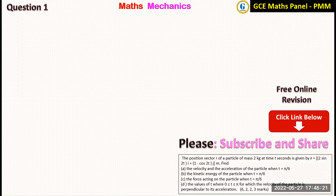The first question reads: the position vector r of a particle of mass 2 kg at time t seconds is given by r equals 2 sine t i plus 1 minus 2 cos t j. Part A: find the velocity and acceleration of the particle at t equals pi on 6. To find velocity and acceleration when given the displacement vector, we differentiate the displacement vector to get the velocity and take the second derivative for the acceleration.